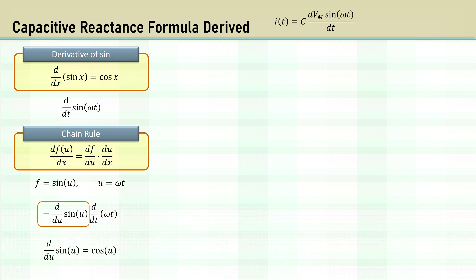Let's work on the left side first. The derivative of sine of U is the cosine of U. Now substitute back omega T. Now let's work on the right-hand side. Pull the constant omega out front. Putting them together, we get the cosine of omega T times omega.